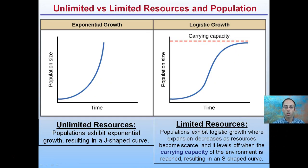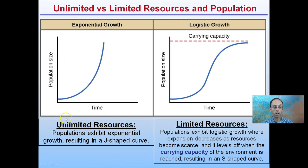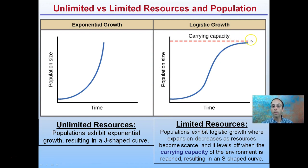Comparing the two: exponential growth assumes unlimited resources, resulting in a J-shaped curve. More realistically, we have the logistic growth model with a carrying capacity — populations exhibit logistic growth where expansion decreases as resources become more scarce and levels off when the carrying capacity of the environment is reached, resulting in this S-shaped curve, which is more true for biological systems.